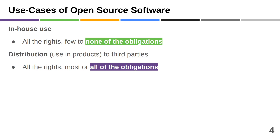When you look at the licenses for using open source correctly, you'll quickly realize there are two categories of use cases. There's in-house use, where you just use the software in your own business — that could be using LibreOffice for word processing or GCC, the compiler, for compiling code. Next to in-house use, there's distribution, which is taking open source as components, putting it into a product, and then selling that product on to a third party.